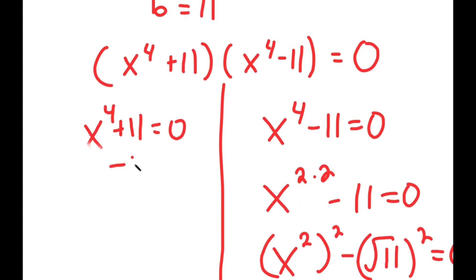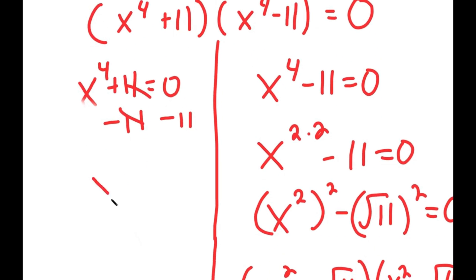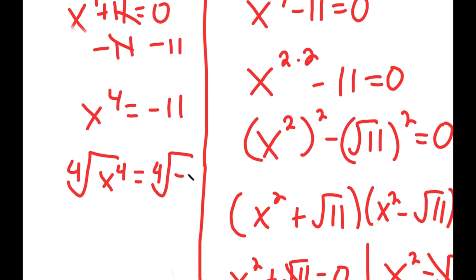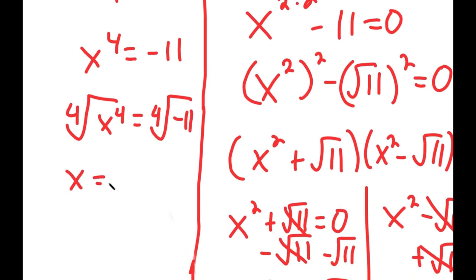Going back to x to the power of 4 plus 11 equals 0, I subtract 11 on both sides to get x to the power of 4 equals negative 11. Taking the fourth root on both sides, I get x equals positive or negative fourth root of negative 11.